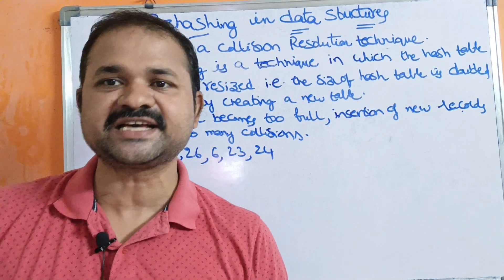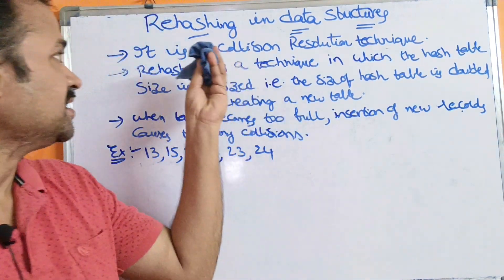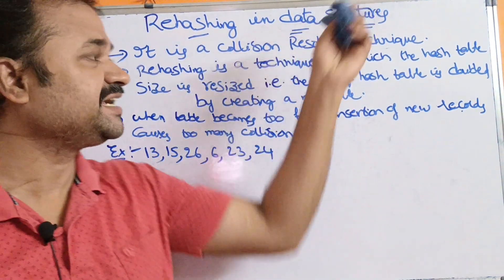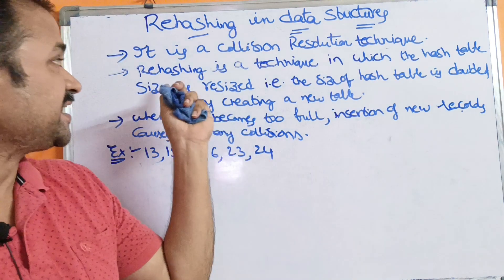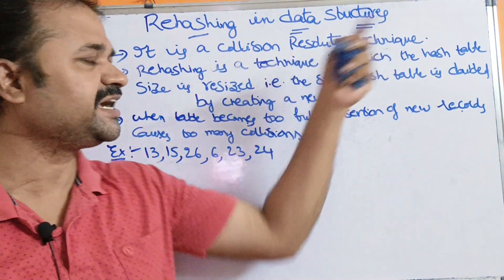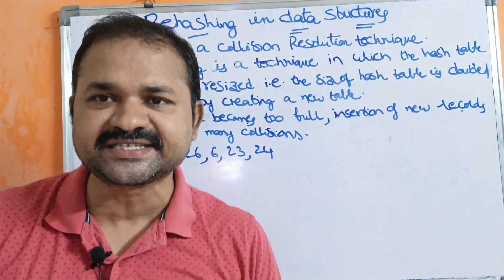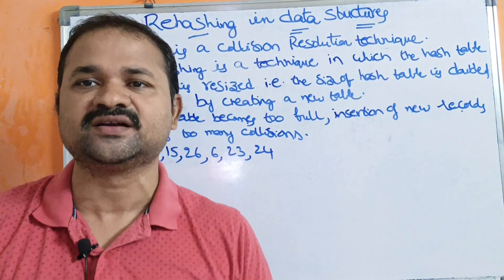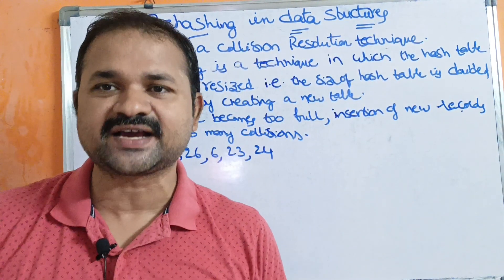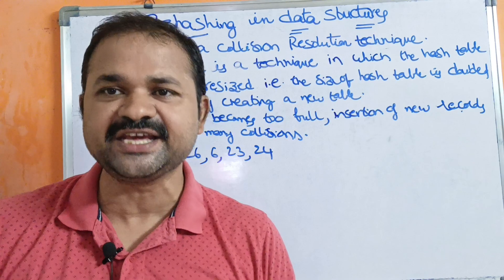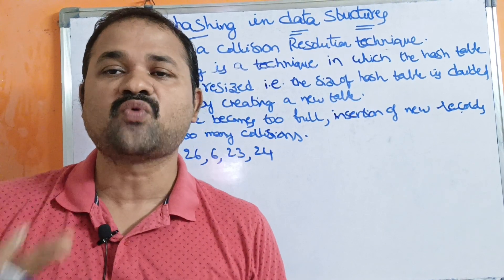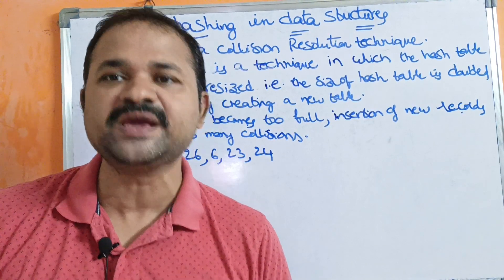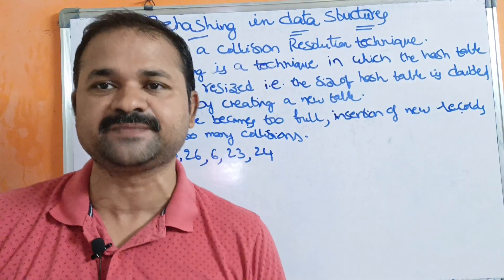Let us discuss rehashing in data structures. Rehashing is a collision resolution technique, just like separate chaining, linear probing, quadratic probing, and double hashing.